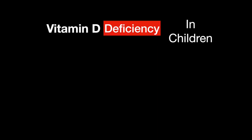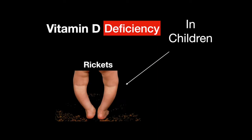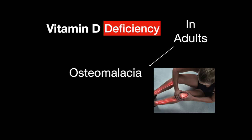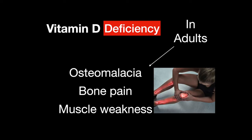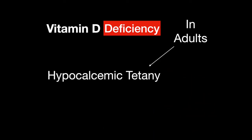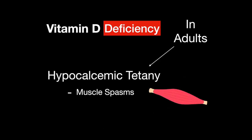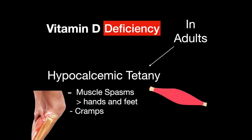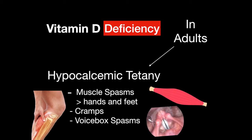A deficiency in D3 for children leads to rickets, when the bones are weak and soft and can result in bow legs. In adults, osteomalacia, or softening of the bone, occurs, accompanied by bone pain and muscle weakness. Hypocalcemic tetany can also occur, characterized by muscle spasms in the hands and feet, cramps, and spasms of the voice box.